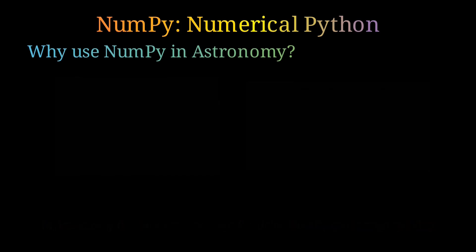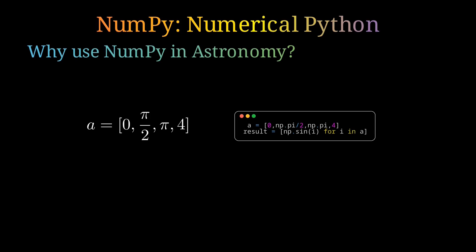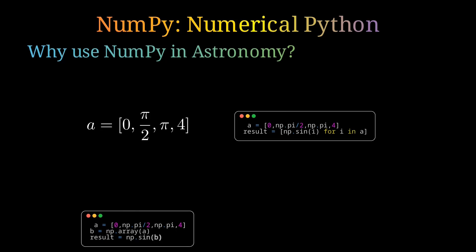There is another reason to use NumPy. Suppose we are analyzing some data and want to apply the sine function on each value. With a normal Python list we have to visit each element one by one, which is very inefficient. With NumPy arrays, you can directly apply the function to the entire array at once. Since in astronomy we apply functions again and again, this is a key reason to use NumPy.